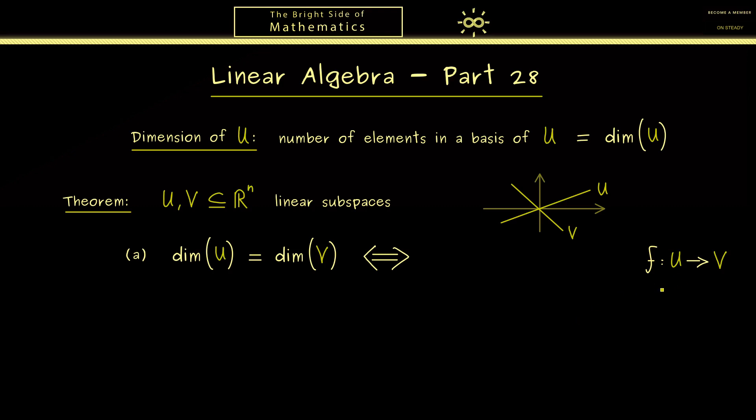However if we know even more about this map here we actually have an equivalence here. More precisely the two things we need here is first it's a bijective map and second it's a linear map. Now on the one hand bijective means we have a 1 to 1 correspondence between U and V. And on the other hand linear means we conserve the linear structure.